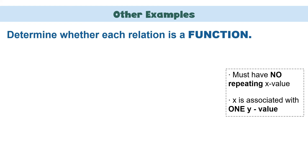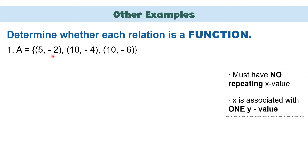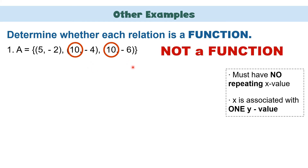Let us have more examples. Remember: to identify a relation as a function, it must not have repeating x values, and x must be associated with only one y value. Example 1: Set A = {(5,-2), (10,-4), (10,-6)}. Looking at the x values: we have 5, 10, and another 10. We have two 10s, so this is not a function because we have repeating x values.